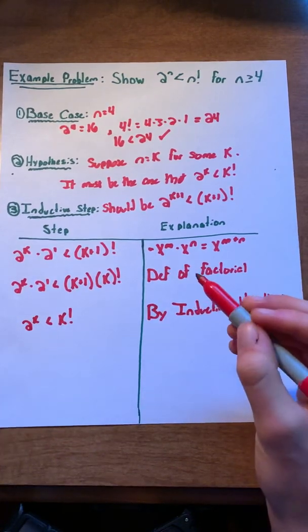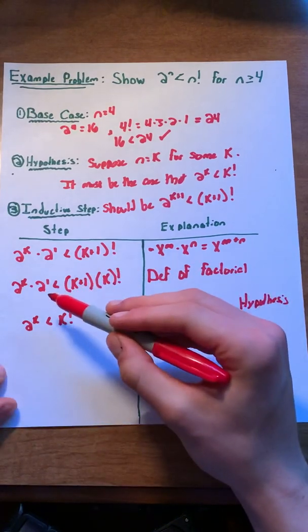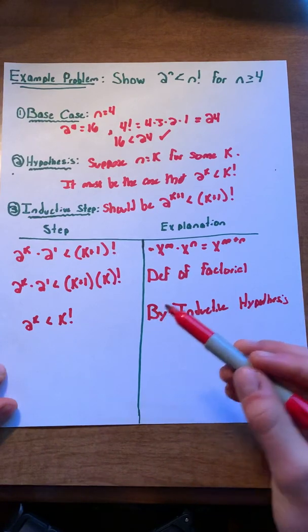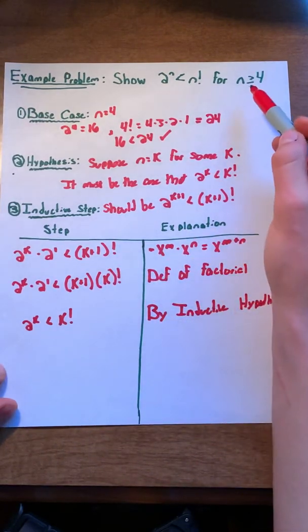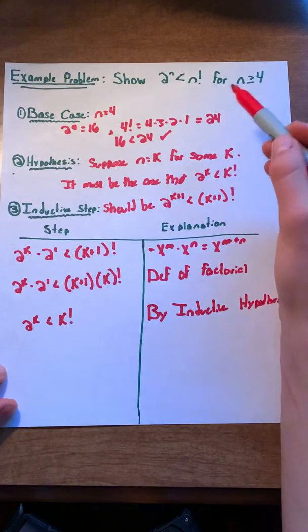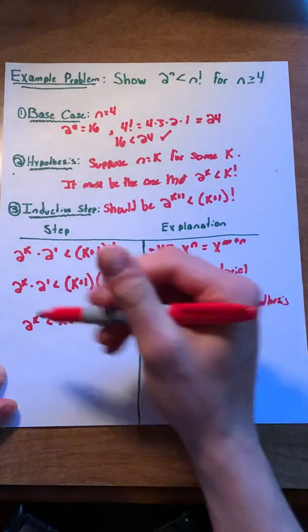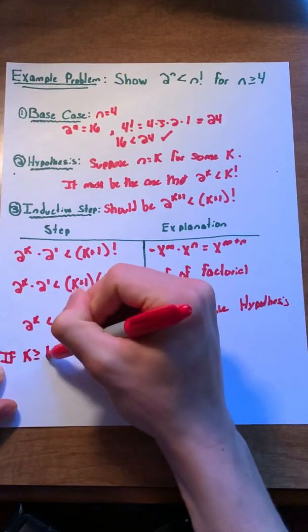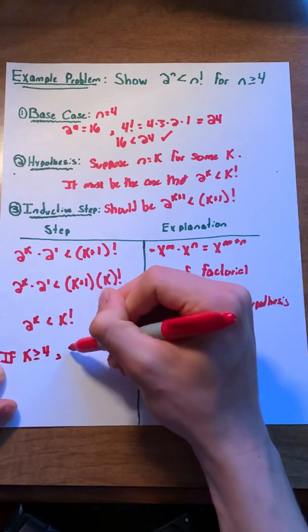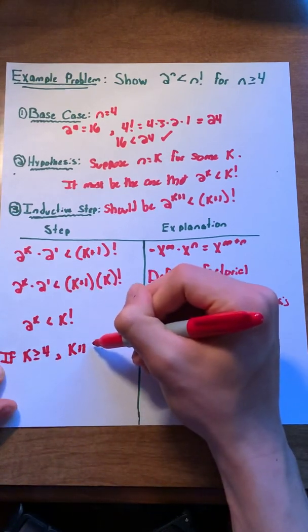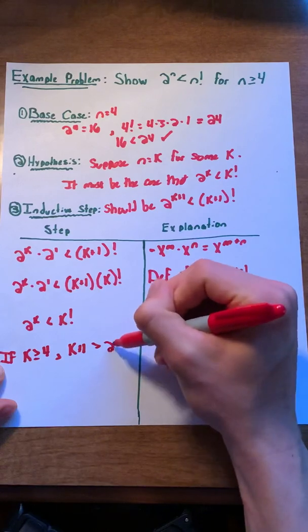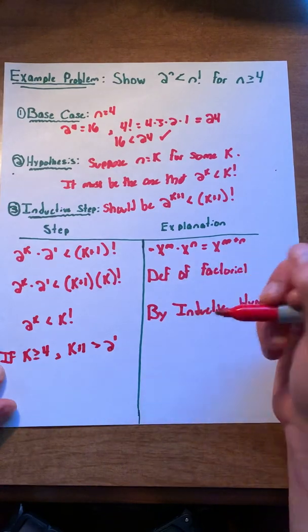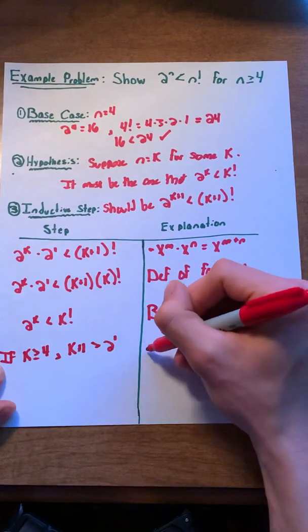However, one portion of our equation still remains. We still have 2 to the 1 and k plus 1. However, we're trying to show that this equation holds for n is greater than or equal to 4. In this case, k is greater than or equal to 4. So, if k is greater than or equal to 4, then k plus 1 must be greater than 2 to the 1. And that is by the definition of math, essentially.